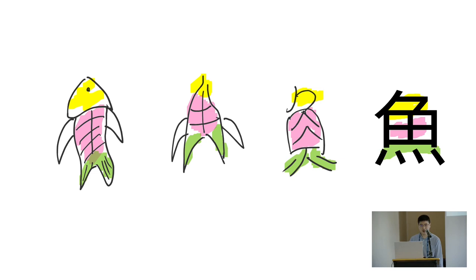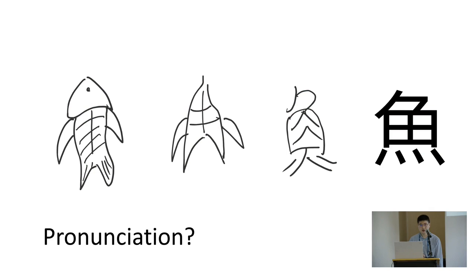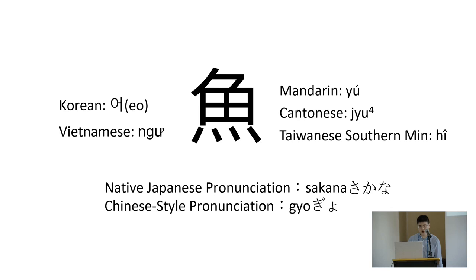If you want to know where the head, body, and tail of the fish are, you can still recognize that in the modern Chinese script. What is the pronunciation? Is there anyone who says 'yu'? But my answer is: I don't know. It depends. Every language has its own pronunciation.